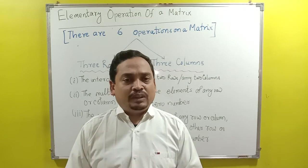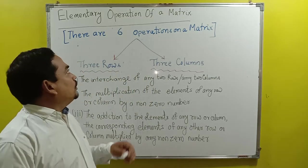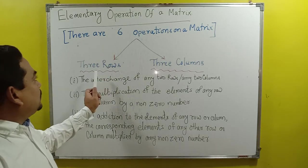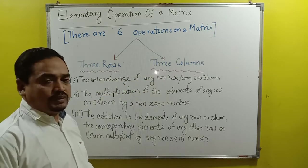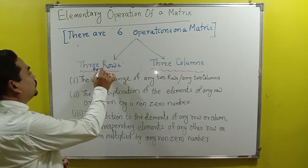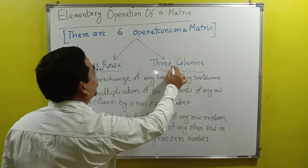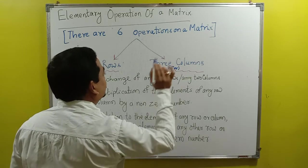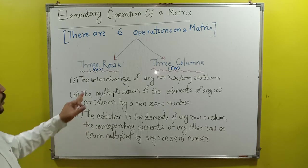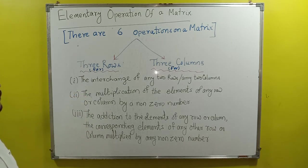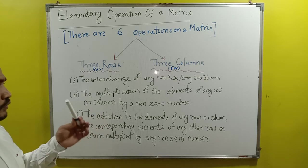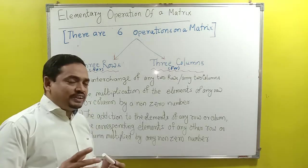Total 6 elementary operations — 3 for rows, 3 for columns. What are these operations? The first operation is: interchange of any 2 rows or any 2 columns. What is the first operation telling us?